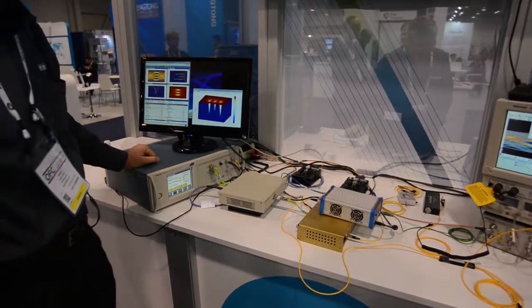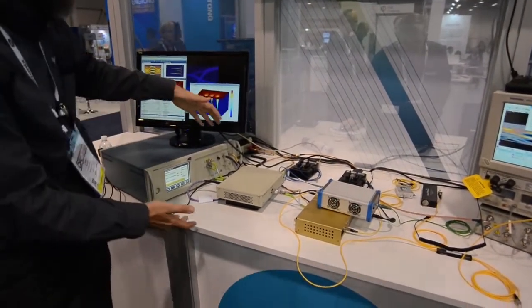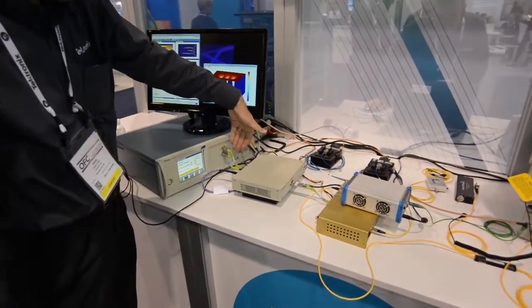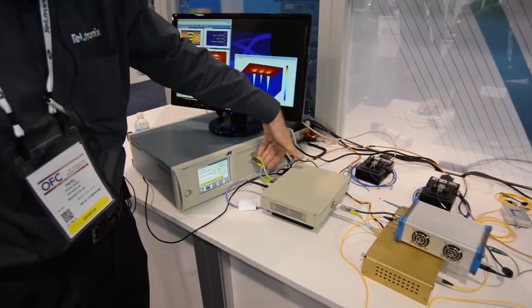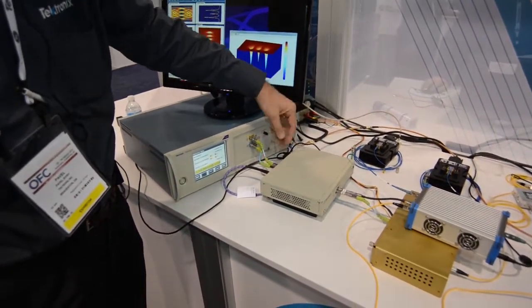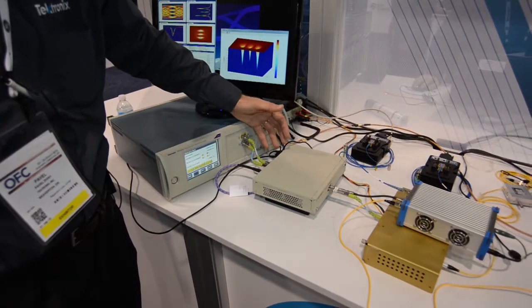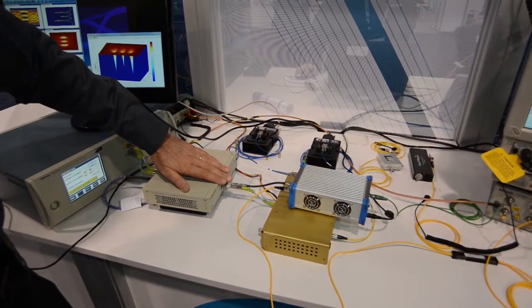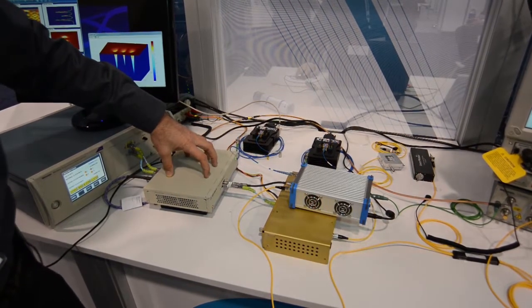So here is the overview of our setup. What we do here, we have an electrical signal generation, we combine signal. So we are using our PPG3202, running right now at 28 giga, two channels. We combine that into one 56 gigabit stream in this MAX from SHF.